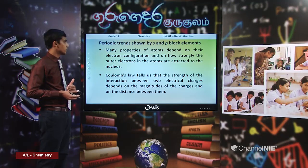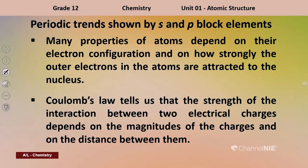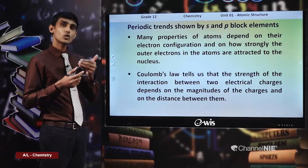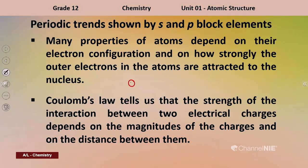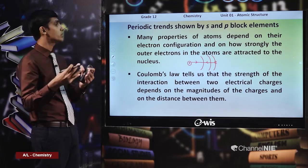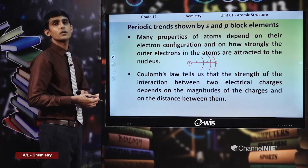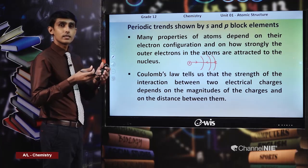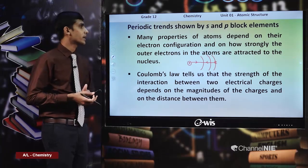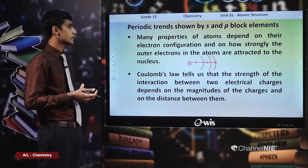Most of these properties depend on the electron configuration of the elements, especially the outer electron configuration — basically the strength with which outer electrons are attracted to the nucleus. In atoms, the nucleus is there and electrons are in energy levels. The strength with which valence electrons are attracted to the nucleus is one very important factor determining the properties of the elements, because valence electrons are the ones involved in chemical reactions.